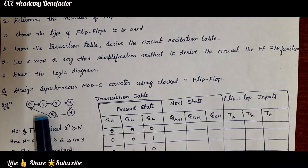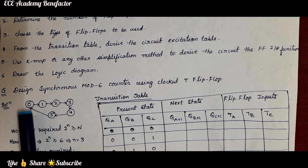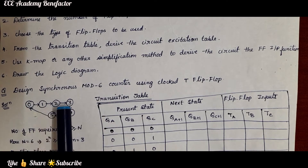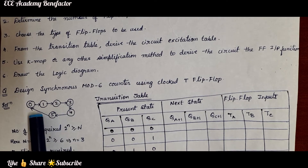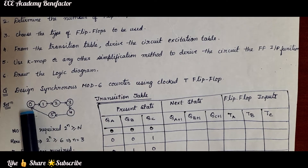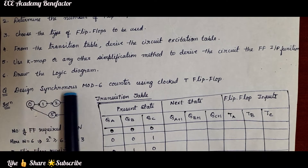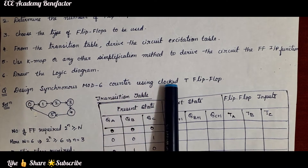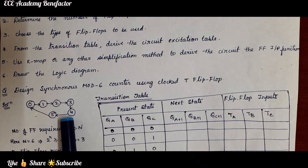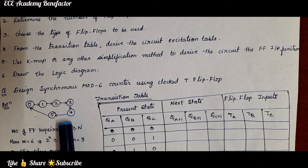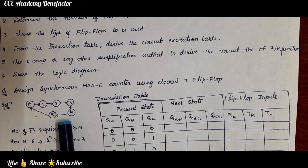The state diagram for the mod six counter is: 0, 1, 2, 3, 4, 5, and after 5 it goes back to 0. Based on the circuit question statement we have drawn the state diagram. Mod six counter counts six states starting from 0 to 5, and after 5 it goes back to 0.